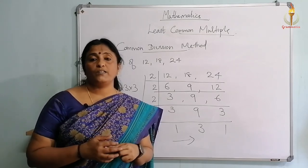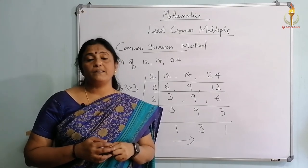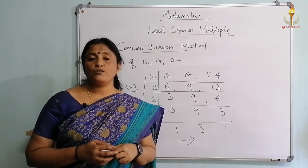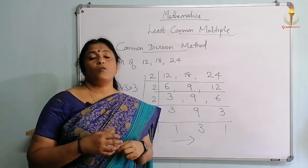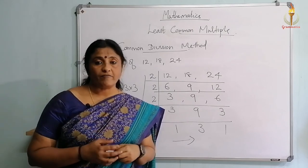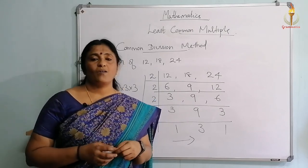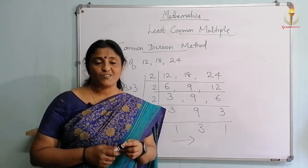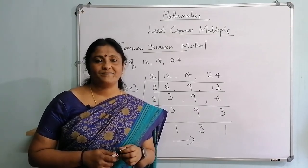So this is what we did today — the Least Common Multiple. The LCM of any two or more given numbers can be found using the prime factorization method and the common division method. That is all for today. Thank you and bye.